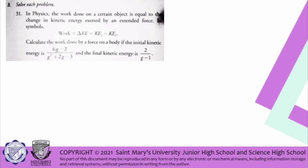Let's have more examples regarding rational algebraic expressions. We have problem number 31 on your textbook page 57. In physics, the work done on a certain object is equal to the change in kinetic energy exerted by a force. Calculate the work done by a force on a body if the initial kinetic energy is (6g − 2) / (g² + 2g − 3) and the final kinetic energy is 2 / (g − 1). This is an example of a subtraction problem on rational algebraic expressions.